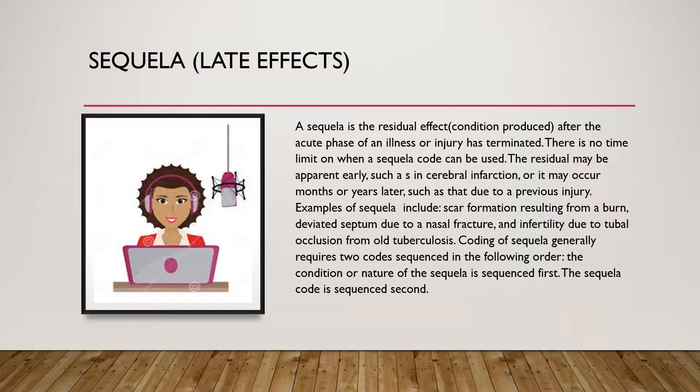Examples of sequela include scar formation resulting from a burn, deviated septum due to a nasal fracture, and infertility due to tubal occlusion from old tuberculosis.